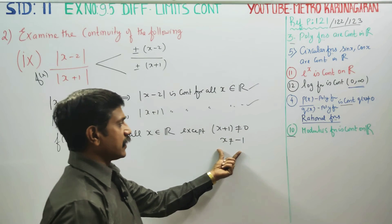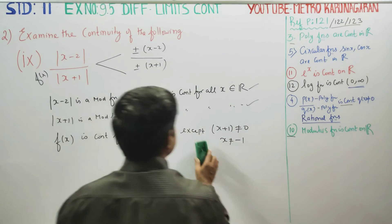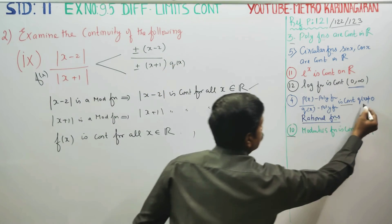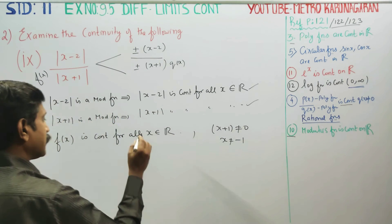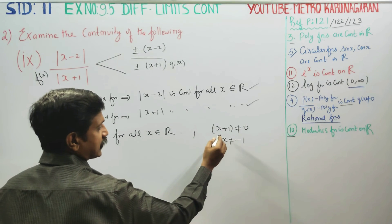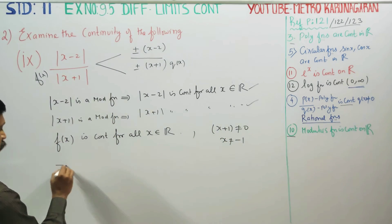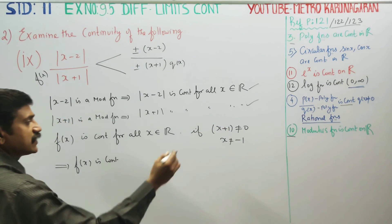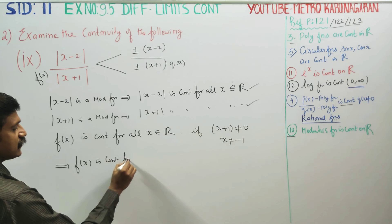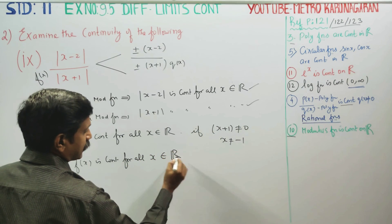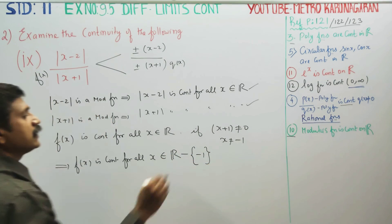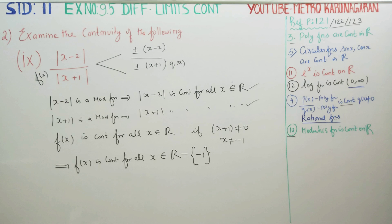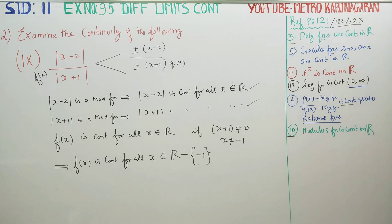So, where q(x) is not equal to 0, f(x) is continuous for all x belonging to the real numbers minus {-1}. If you have to eliminate one element, the function will still exist, but there will be a gap in the graph. Thank you.